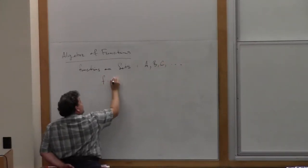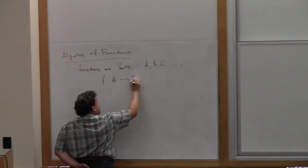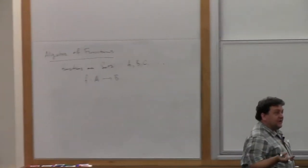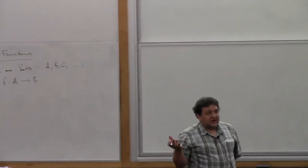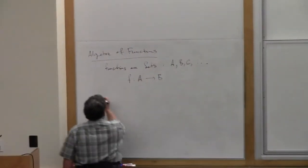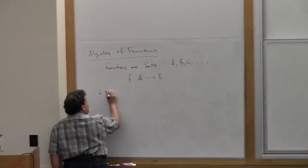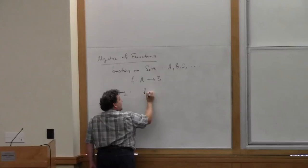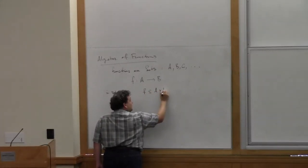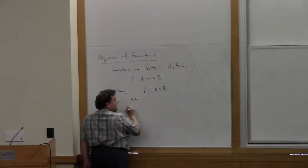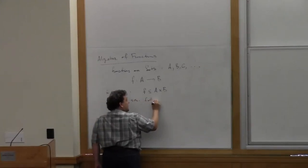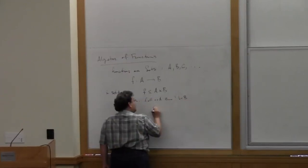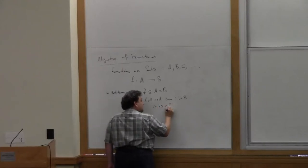Suppose our sets are written with capital letters. A function F going from A to B is, to remind you, a subset of the Cartesian product of A and B, which is a relation on A cross B. Officially, in set theory, a function from A to B is a subset of pairs such that for all a in A, there's a unique b in B such that the pair (a, b) is an element of that relation F. That's the official definition of a function.